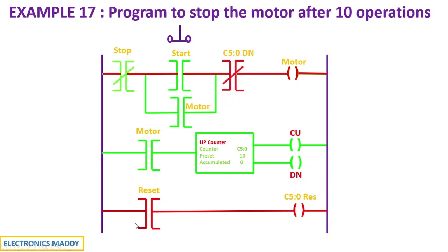So this is how we stop the motor after 10 operations using an up counter. I hope this ladder logic program was clear to you. In case you have any questions, feel free to reach out by typing in the comment section below. If you like this video, please do like it, share it, and subscribe to our channel for regular updates. Thanks for watching — meet you guys in another video. Thank you.